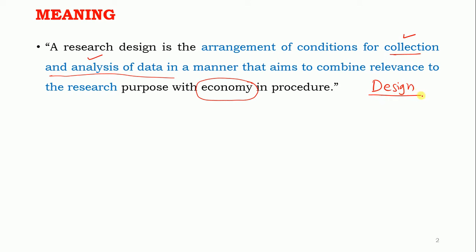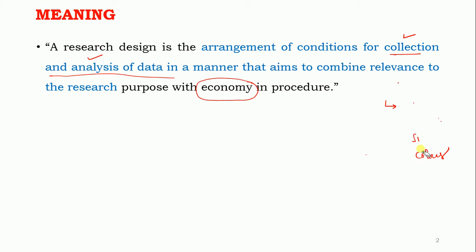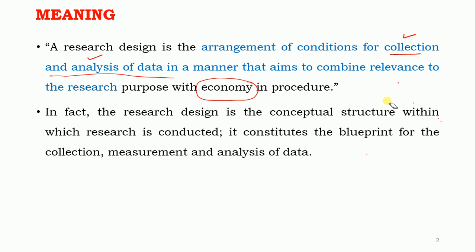Research design is like a general design concept. Whenever we go for designing any component, we decide the material, size, shape, color — everything. For example, for designing a pen, we decide all these things. Similarly, when we go for research design, we decide all parameters related to it: how to collect data, how to analyze data, what procedure to use for experimentation, and so on.